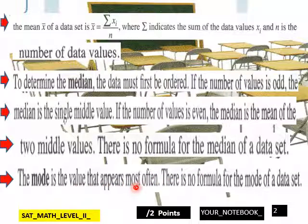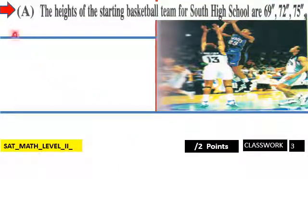The mode is the value that appears most often. There is no formula for the mode of a data set either. So let's get into an example here.